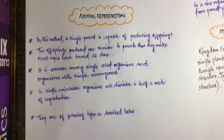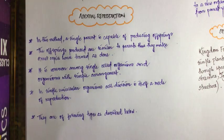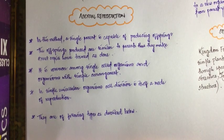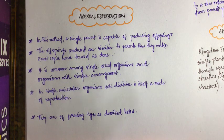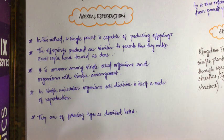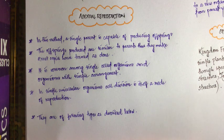In asexual reproduction, a single parent is capable of producing offspring. In each type and process of asexual reproduction, only one single parent is involved. The offspring produced are exactly similar to their parents and their genetic constitution is also similar. Inside cells we have a nucleus, inside the nucleus we have DNA, and the genetic arrangement — the arrangement of DNA — in the parent and the newly formed organism is similar.